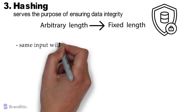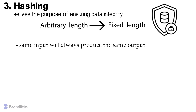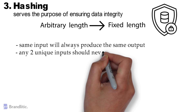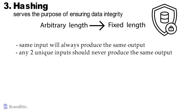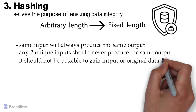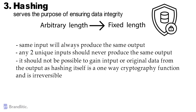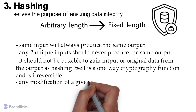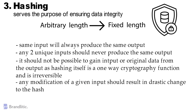First, the same input will always produce the same output. Second, any two unique inputs should never produce the same output. Third, it should not be possible to gain input or original data from the output, as hashing itself is a one-way cryptographic function and is irreversible. And last, any modification in a given input should result in a drastic change to the hash.